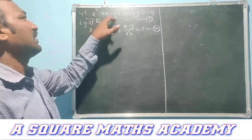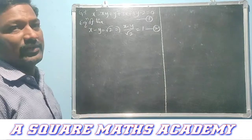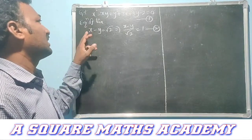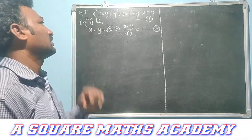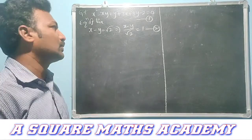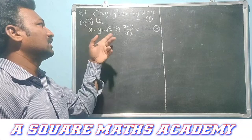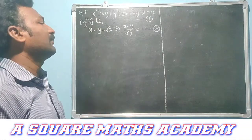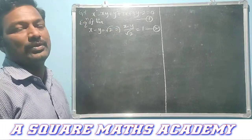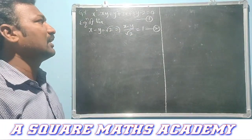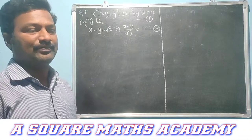The given equation of the curve is x² + y² + 3x + 3y − 2 = 0. The equation of the line is x − y − √2 = 0, that is x − y = √2. Dividing both sides by √2, we get x − y / √2 = 1.